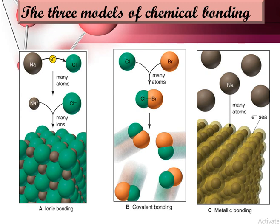In ionic bonding, sodium metal changes into sodium ion and a chlorine atom changes into chlorine ion. Sodium was neutral and becomes a positive ion, while chlorine was neutral and becomes a negative ion. The many atoms become many ions and by ionic bonding they form crystal lattices — for example, sodium chloride (table salt) lattice is an example of ionic bonding.